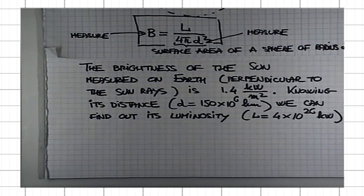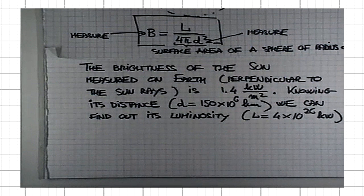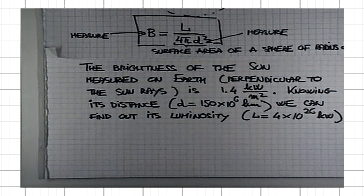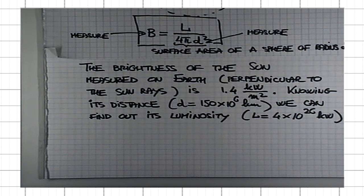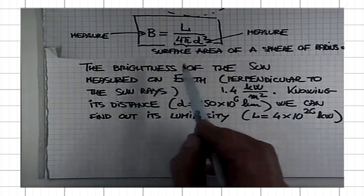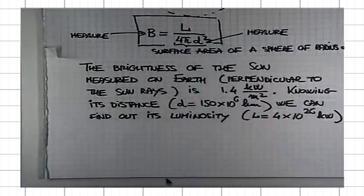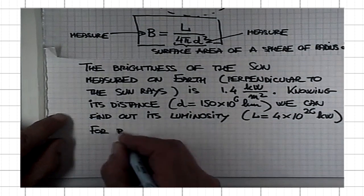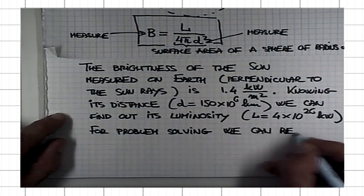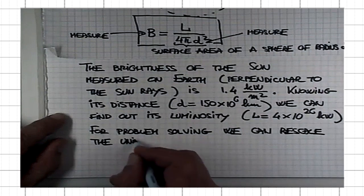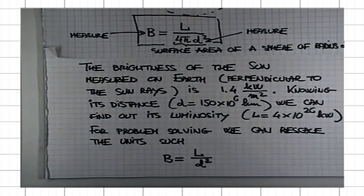Now, for solving problems, this is always used in astronomy, but for solving some simple problems that you will be asked to do, we'll go through a set of examples from last year's test. You can always change the units to absorb this factor of 4π, either in the units of luminosity or distance. For problem solving, we can rescale the units such that the brightness is simply the luminosity of the source over the distance to the source squared.